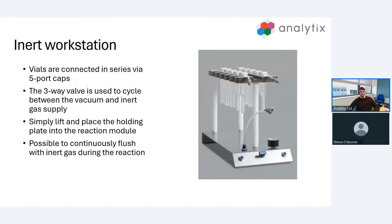Secondly, we have our inert workstation. When you're wanting to work under an atmosphere and you don't want to individually inertize your vials, we can inert all of them at once using our five port caps connected in series. Here we're using a three-way valve with a vacuum and inert gas supply. We can use any inert gas but typically we use nitrogen. By cycling between vacuum to inert, we're firstly evacuating all the atmospheric air from the vials and then replacing it with inert gas. We cycle between these two for a few minutes a couple of times.